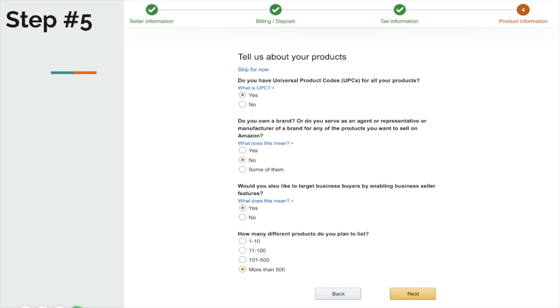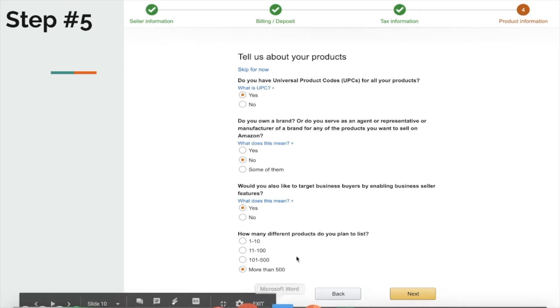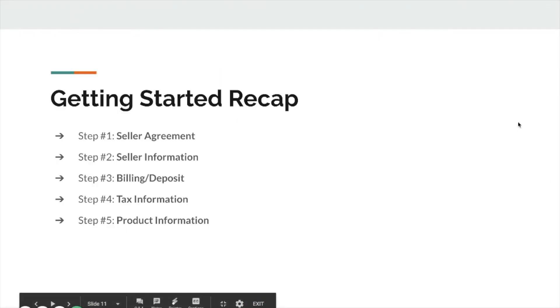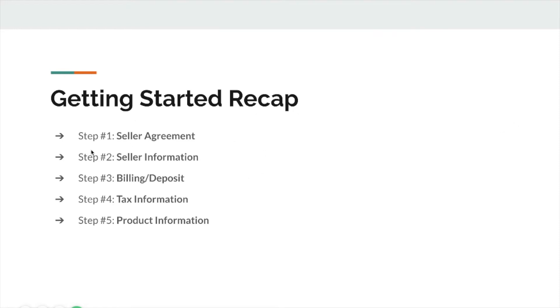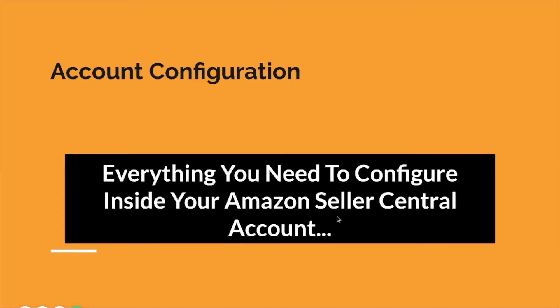Would you also like to target business buyers by enabling business seller features? Choose yes for that one. How many different products do you plan to list? Choose more than 500, or whichever is the highest option for you. Quick recap: seller agreement with your legal name and terms, selling information, billing and deposit information, tax information, and product information — those are the five steps.